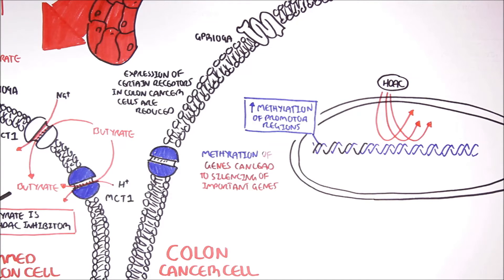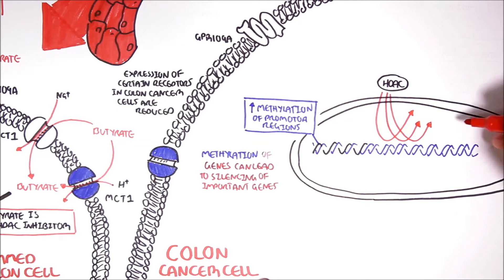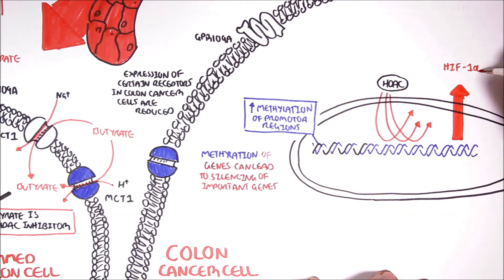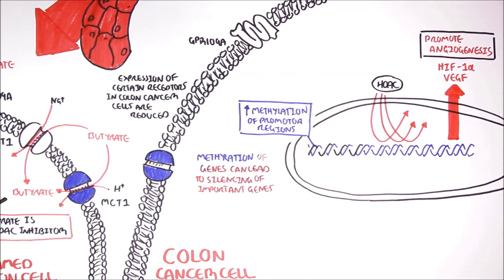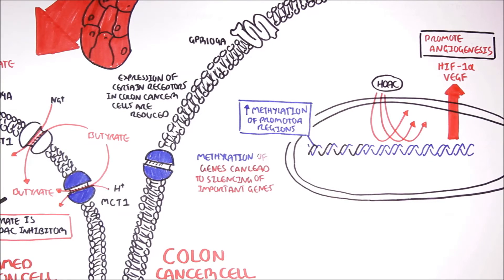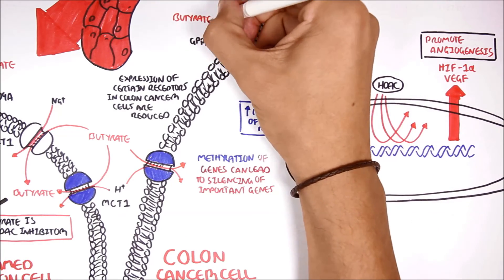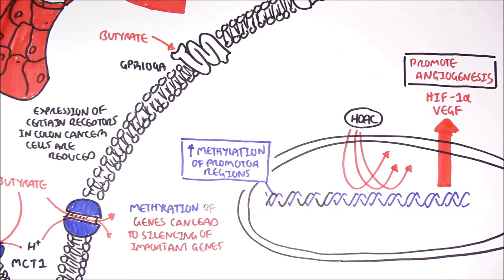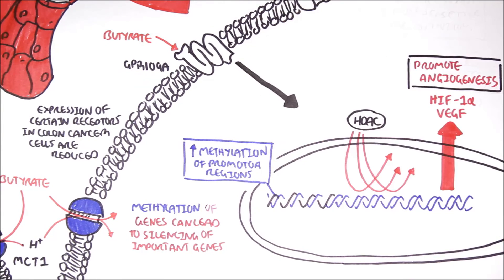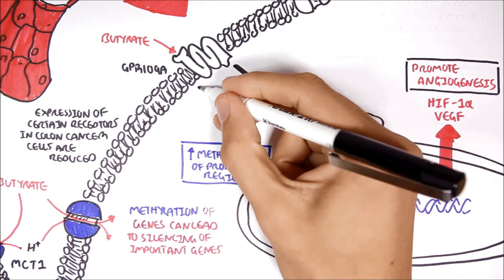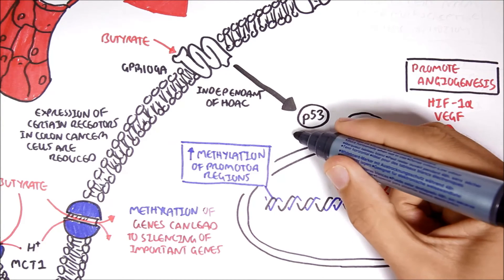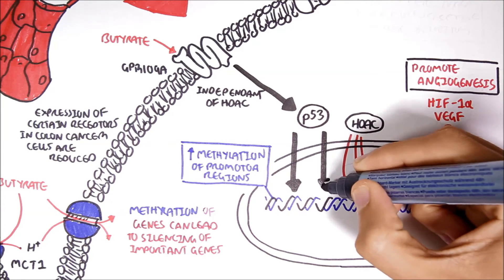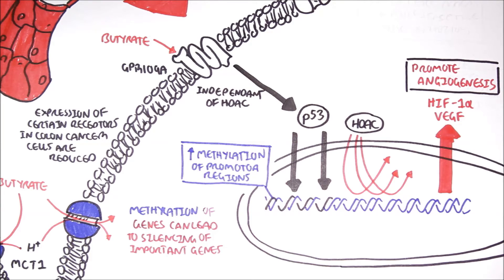Now, colon cancer cells love to proliferate. At the same time, these cells require more and more energy and nutrients. In order to do so, there is an increase in HIF1-alpha and VEGF, which are angiogenic factors. Now, butyrate can enter the cell or activate the G-protein receptor 109A, if the channels and receptors are expressed. By activating the G-protein receptor 109A, butyrate can activate P53, independent of the histone deacetylase.